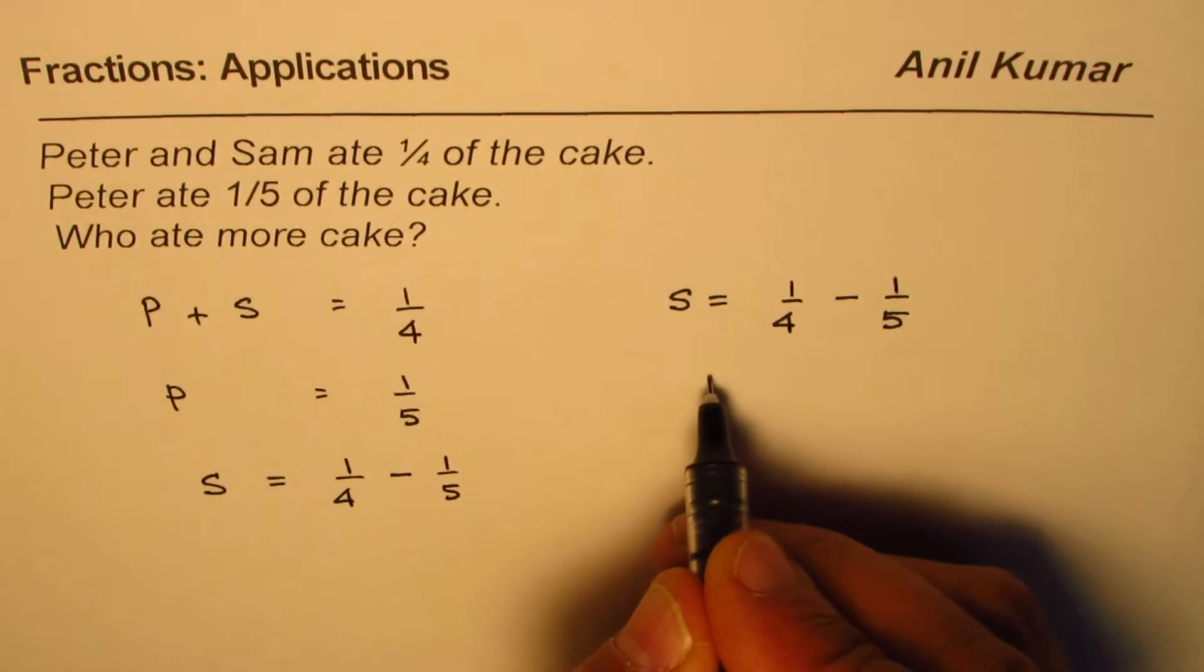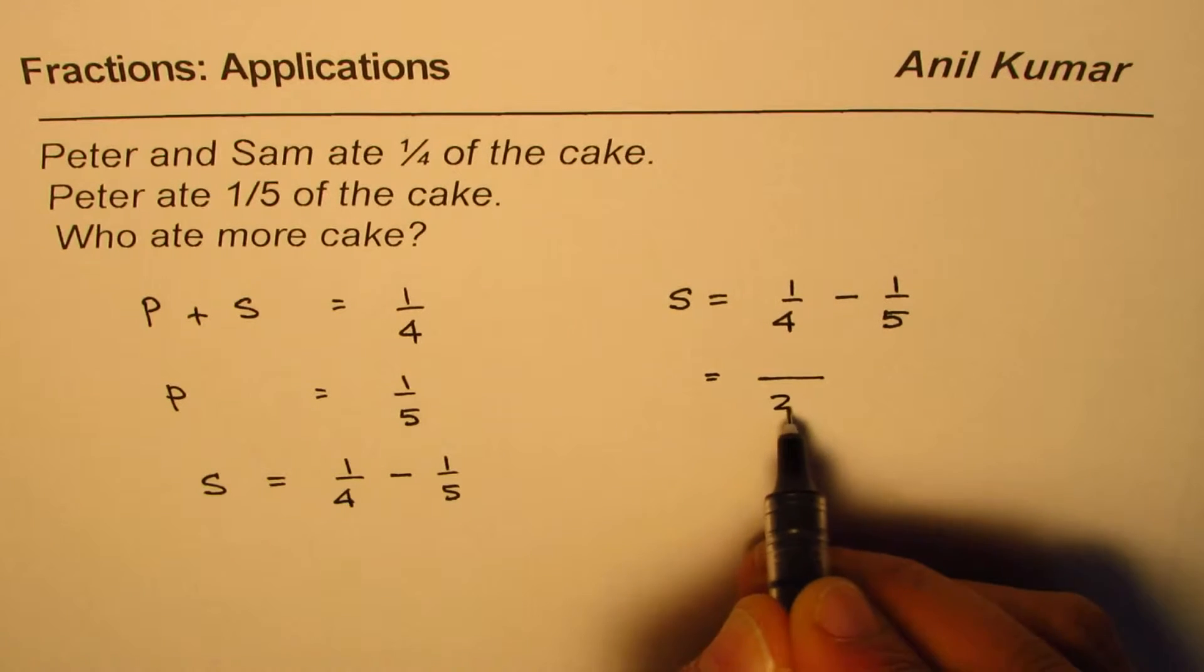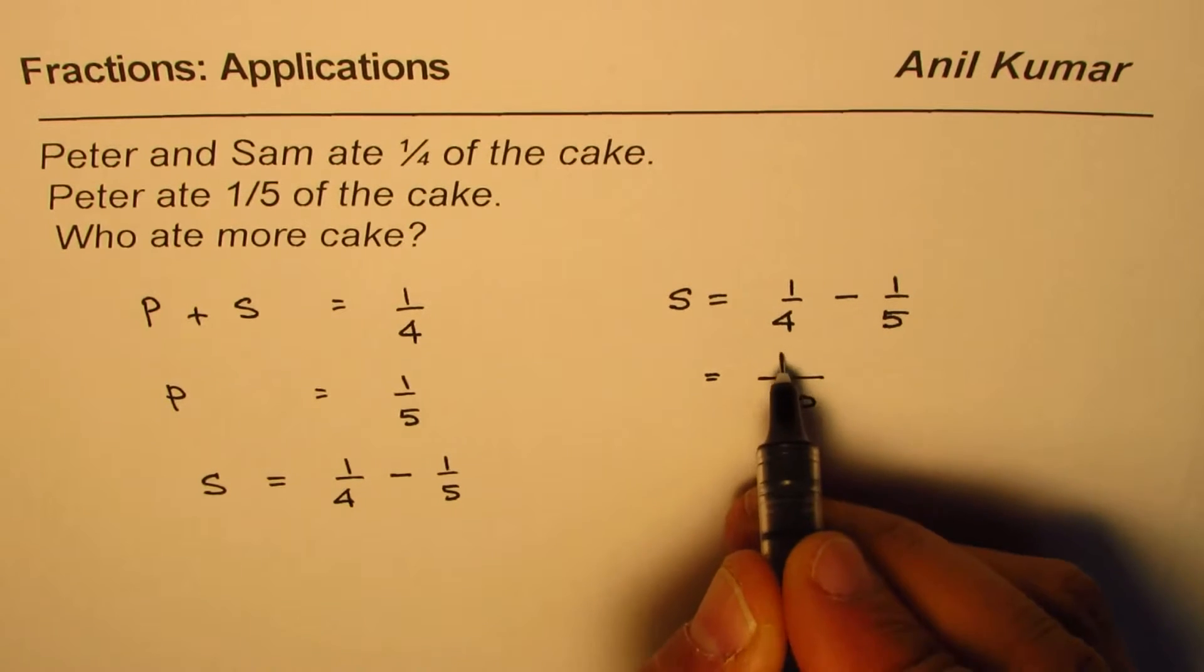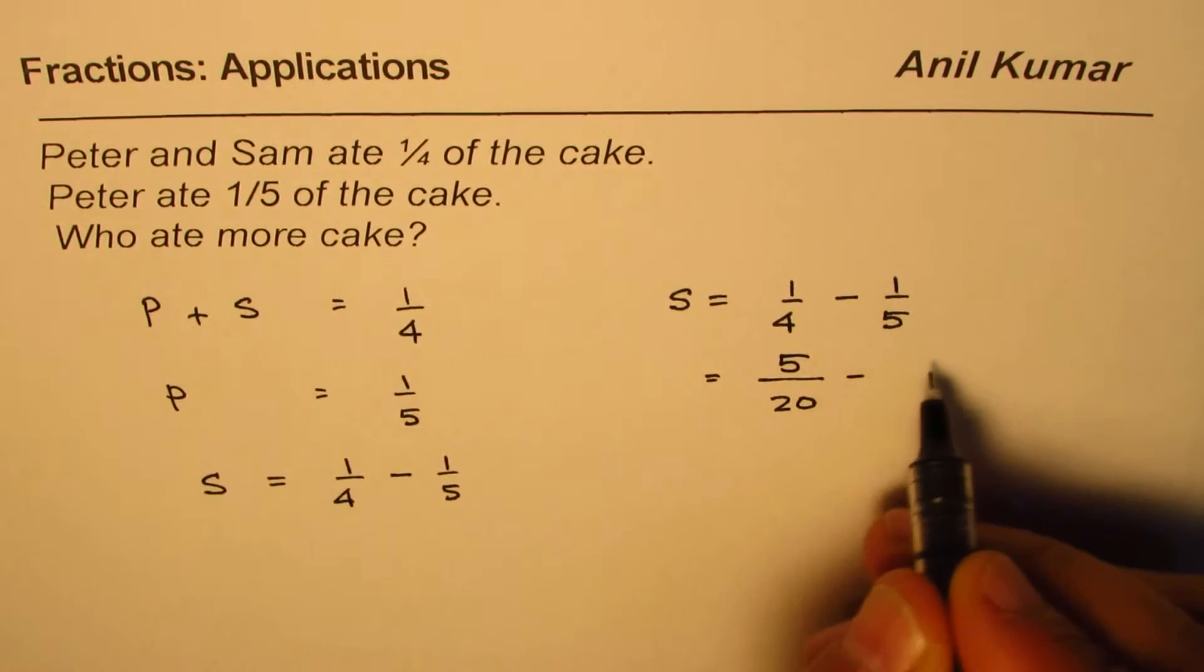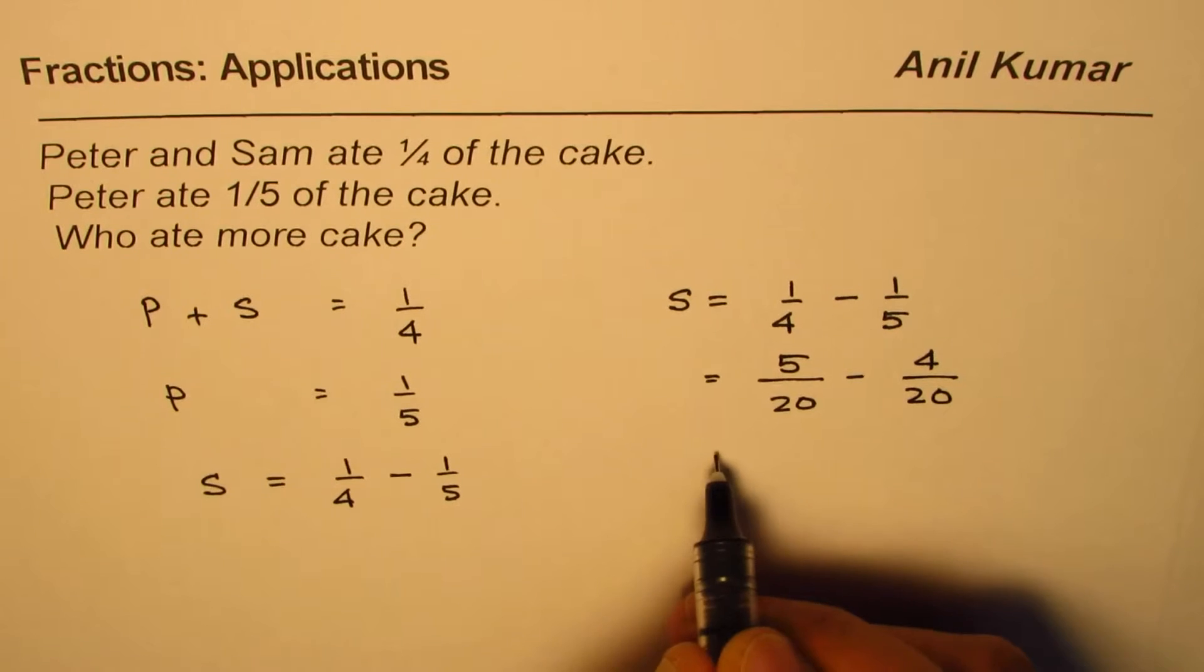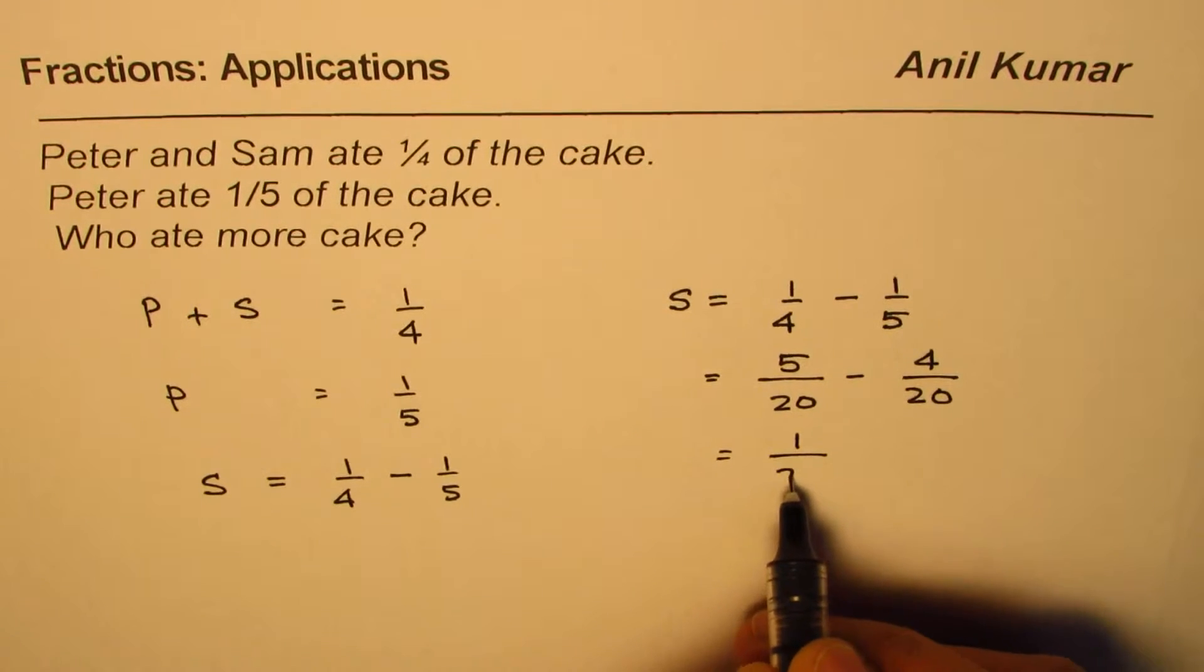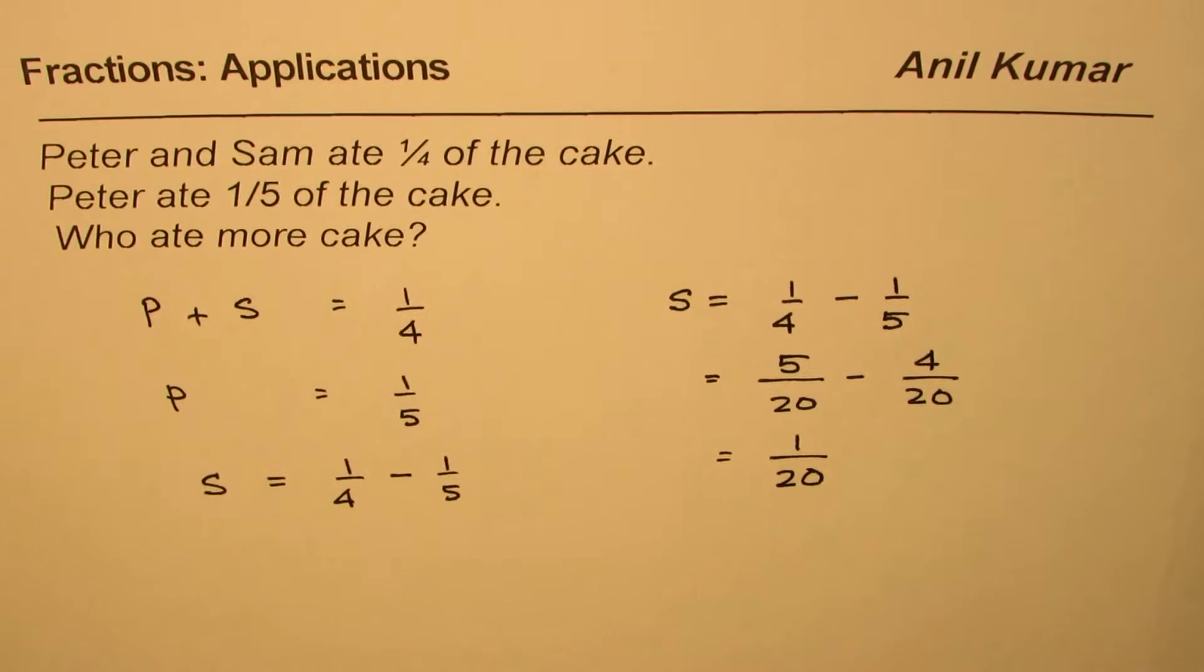Let us calculate this amount. So, to find this, we'll have common denominator of 20, right? To make 20, I have to multiply this by 5 and this one by 4. So, it is 5 over 20 minus 4 over 20.